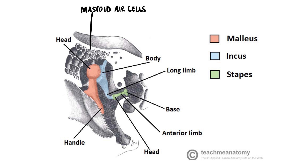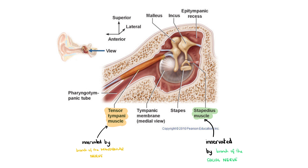The middle ear's role is to transmit and amplify vibrations from the tympanic membrane to the inner ear. It contains the smallest bones of the body: malleus, incus and stapes. These bones, known as the ossicles, connect the tympanic membrane to the oval window of the cochlea. The movement of the ossicles can be partially restricted by the tensor tympani and stapedius muscles, which both contract in response to loud noises and excess vibration to prevent damage to the structures of the inner ear.